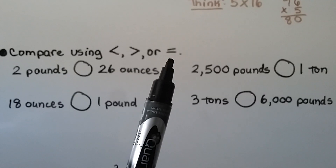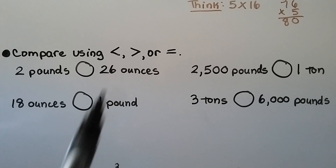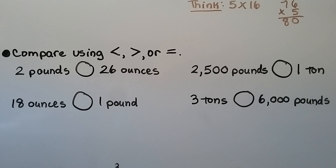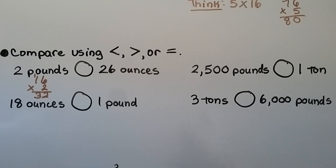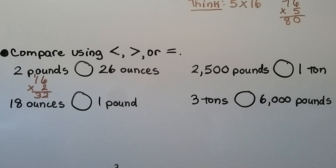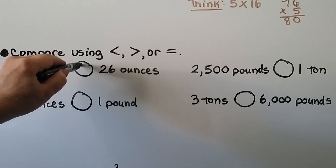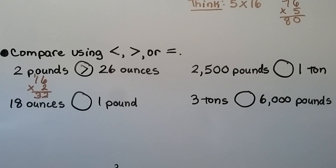To compare two pounds and 26 ounces, we need to convert to the same unit. Two pounds equals 2 × 16 = 32 ounces. Now comparing 32 ounces to 26 ounces: 32 is greater than 26, so two pounds is greater than 26 ounces.